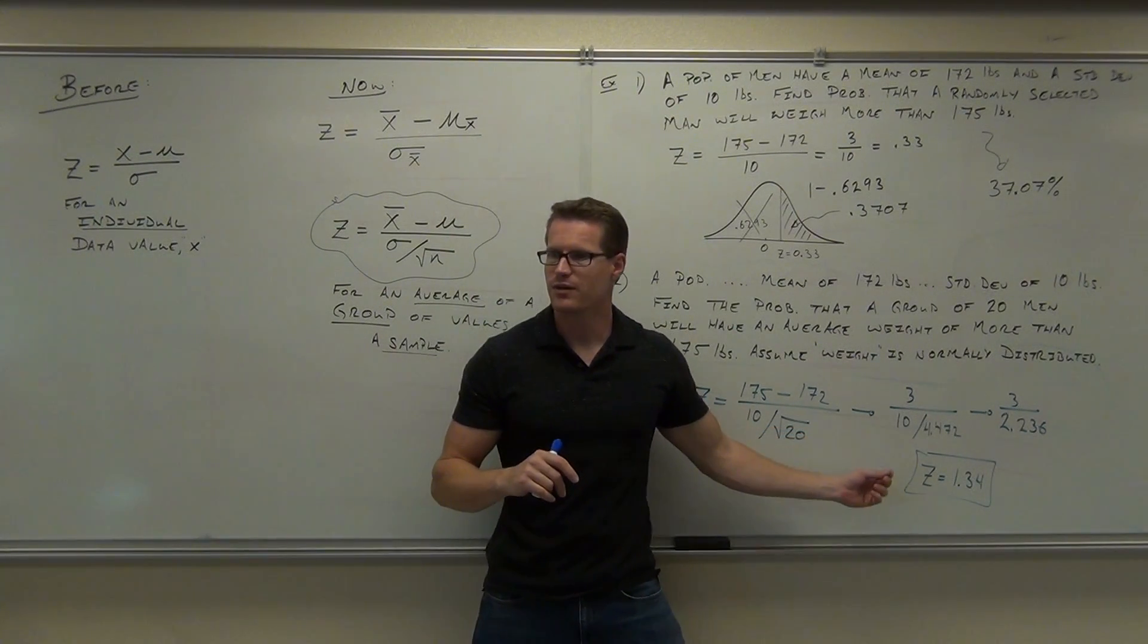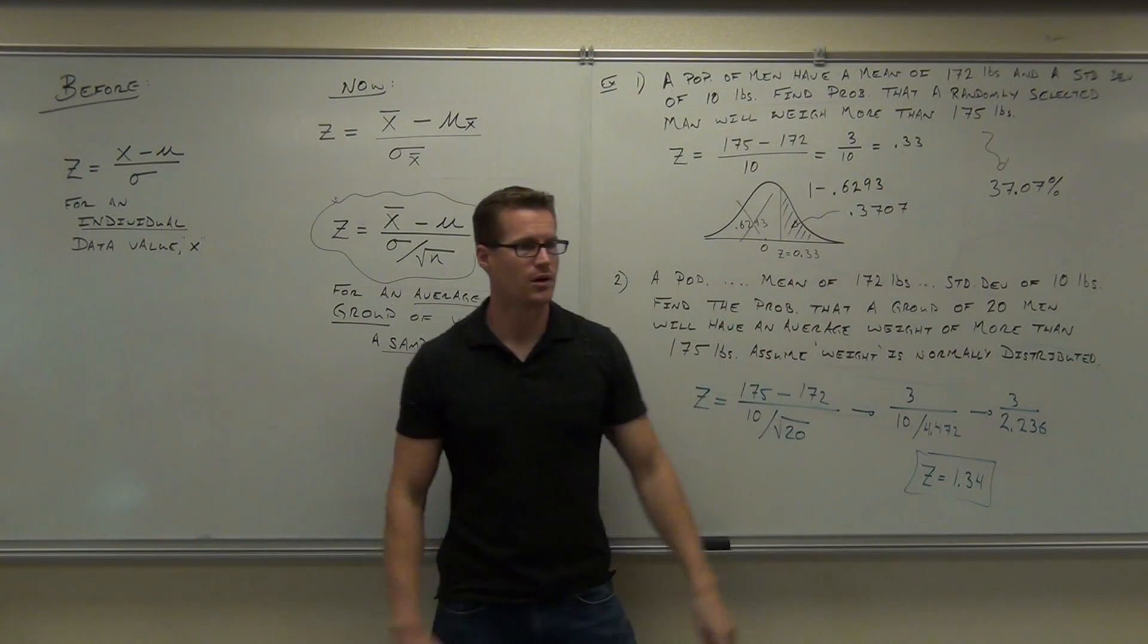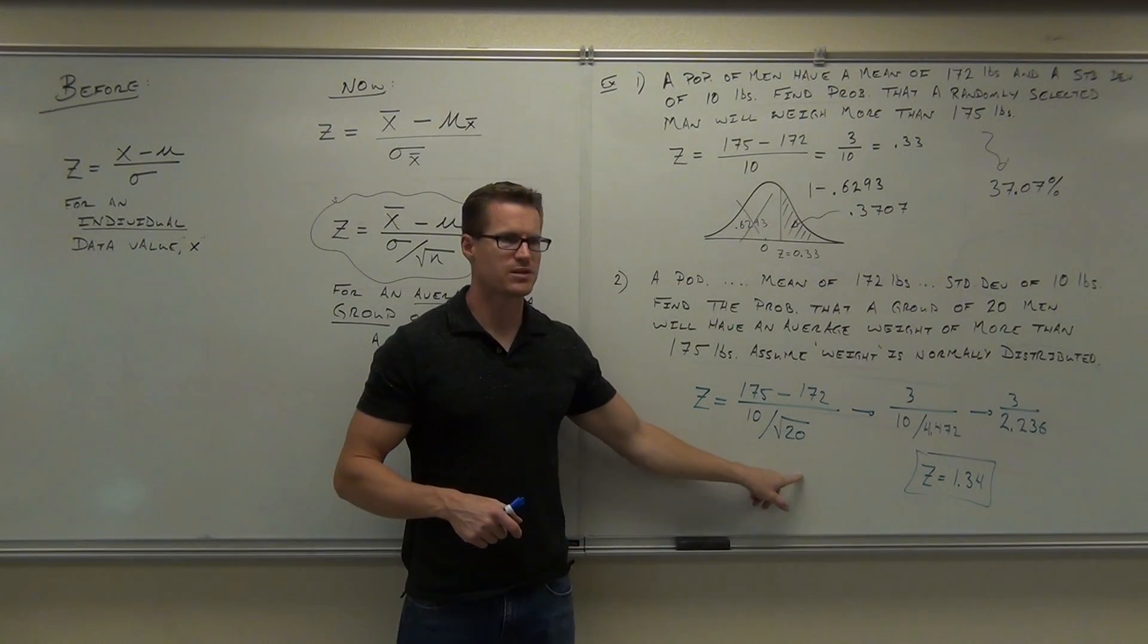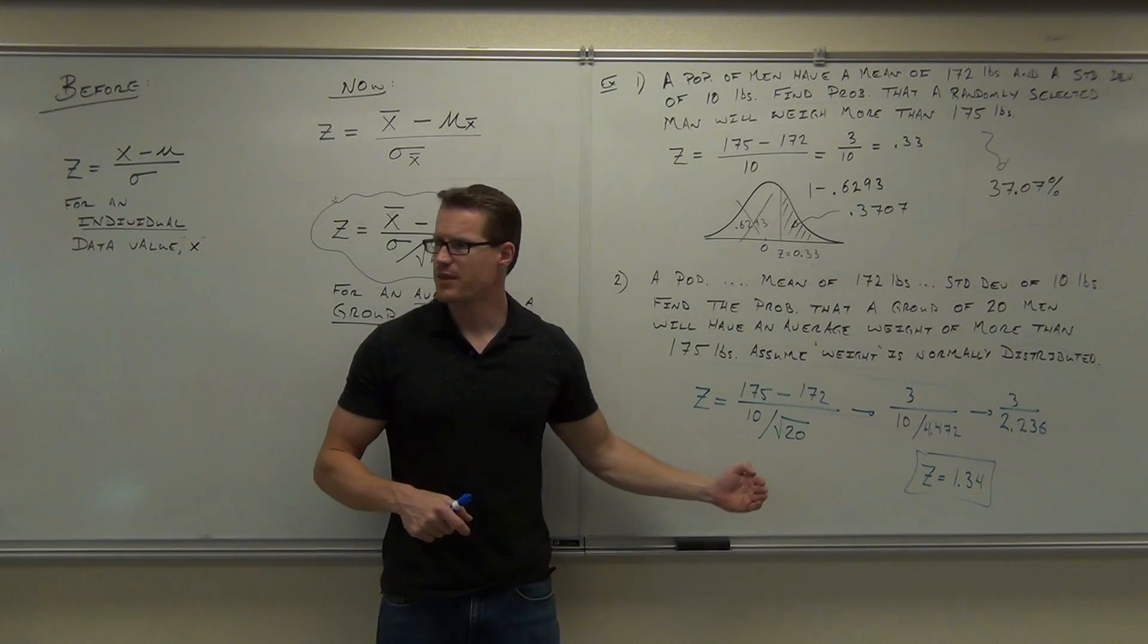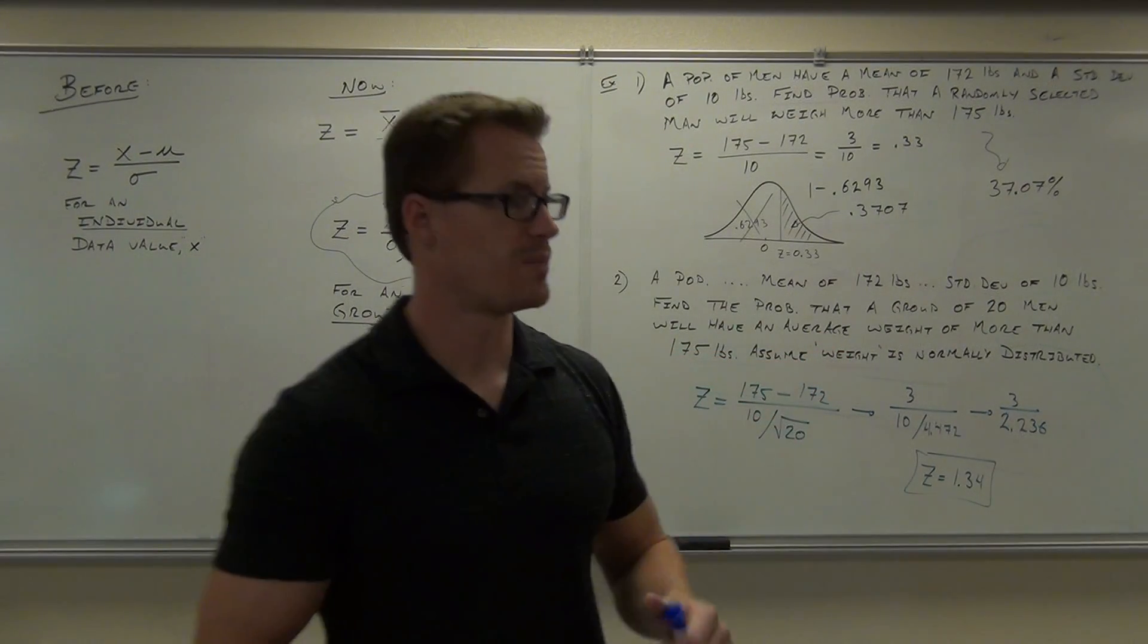We're going to go ahead and find that the probability is going to be much smaller than that when we look it up next time on our table. Try that when you go home. Draw this picture. Make the z-score 1.34 and find the probability of getting an area greater than that or the group of men greater than that.